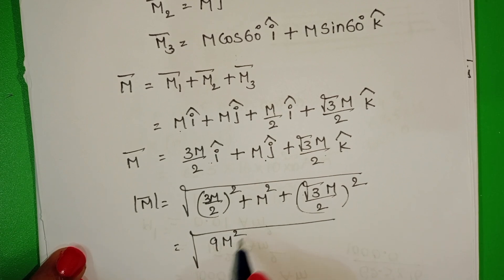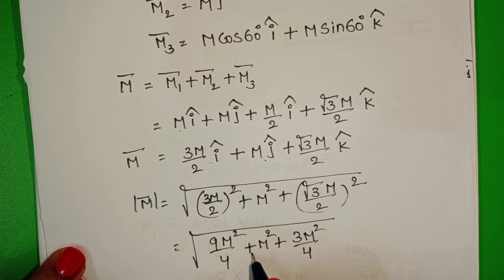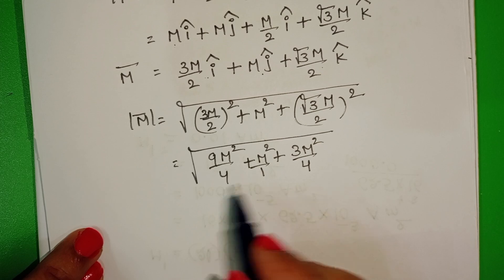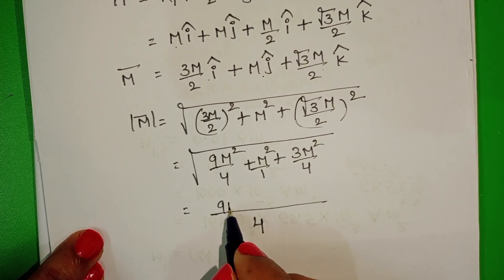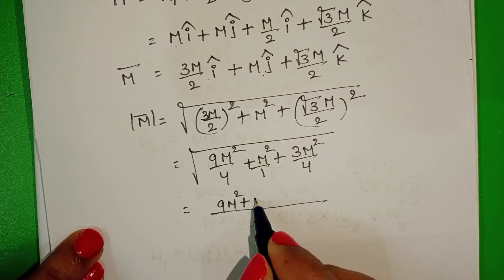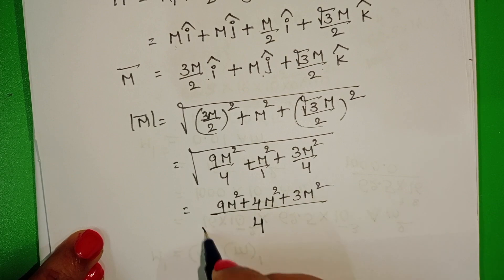9 M square by 4 plus M square plus 3 M square by 4. Taking LCM 4, we get 9 M square plus 4 M square plus 3 M square.